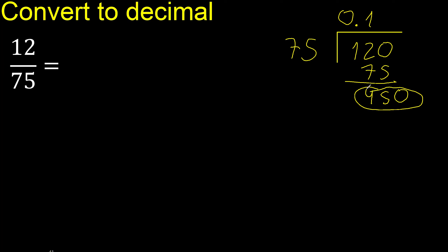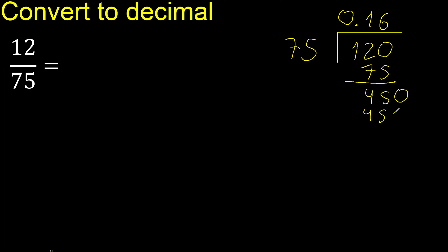450. 75 multiply by which number? 75 multiply by 6 is exact — 450 is not greater. Subtract: 0. Therefore finish.